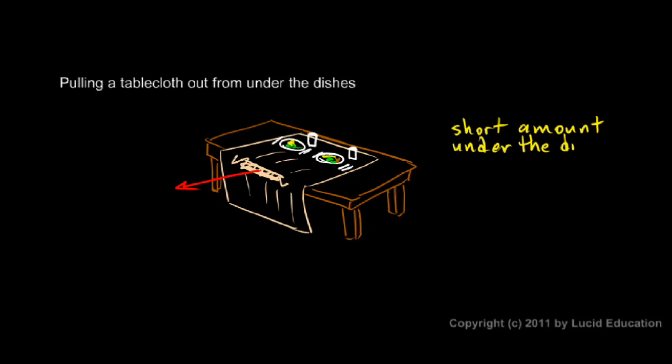So set it up so you only have to pull a short amount of cloth under the dishes. The second thing is the speed - you need speed. If you just drag it slowly, obviously you're going to drag the entire dinner onto the floor. So don't go slow - you want to go as fast as you possibly can.